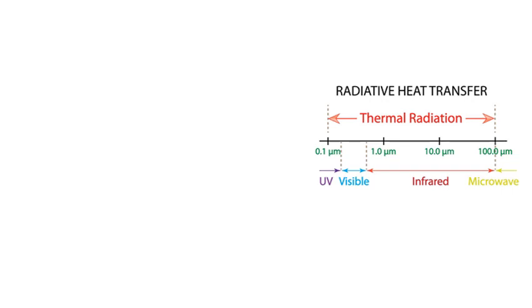Almost half of the solar radiation is light which falls in the visible range, with the remaining being ultraviolet and infrared regions. The color of a surface depends on its ability to reflect radiation at certain wavelengths. For example, a surface that reflects a fraction of radiation in the wavelength range 0.63 to 0.76 micrometers while absorbing the rest of the visible radiation appears red to the human eye.